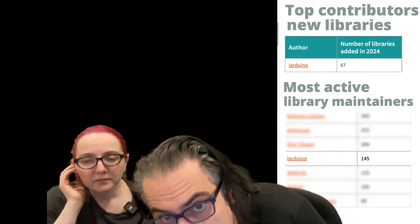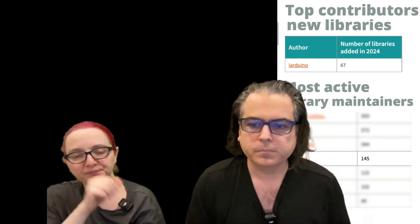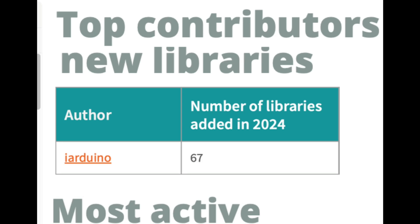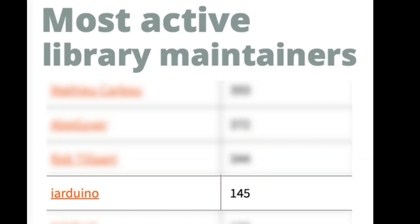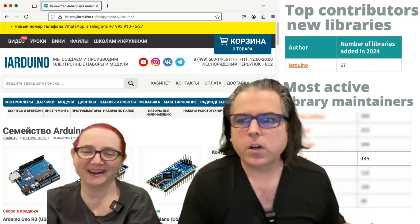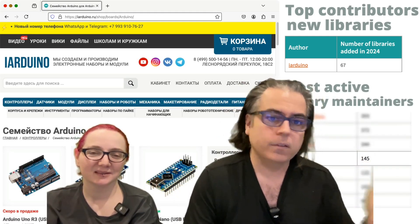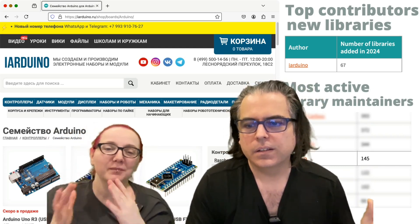In the most active library maintainers, iArduino was listed. I first thought this was Arduino itself doing something — one of their efforts. I was wrong. This has nothing to do with Arduino. Let me zoom in on these so you can see. In calendar year 2024, iArduino added the most new libraries, and they're like number four in the most active maintainers. But when you look at what iArduino is, all things lead to a Russian web store. You could put libraries in there, but they did some things that are not okay with how open source works. Those aren't official Arduinos. And they're using the trademark 'iArduino' for the library name and iArduino.ru as a store name — you're not allowed to do that.